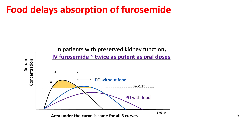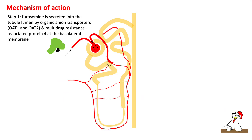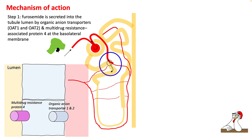Food delays the absorption of furosemide but not torsemide or bumetanide. IV furosemide is around twice as potent as the oral dose, so 20 mg IV Lasix is equal to 40 mg oral Lasix. In hospital, always use IV Lasix to treat your patient rather than the oral form at home. If the patient can avoid taking it with food it would be more beneficial. However, you can certainly give them torsemide or bumetanide. Because they are bound to albumin, they are not filtered across the Bowman's capsule.